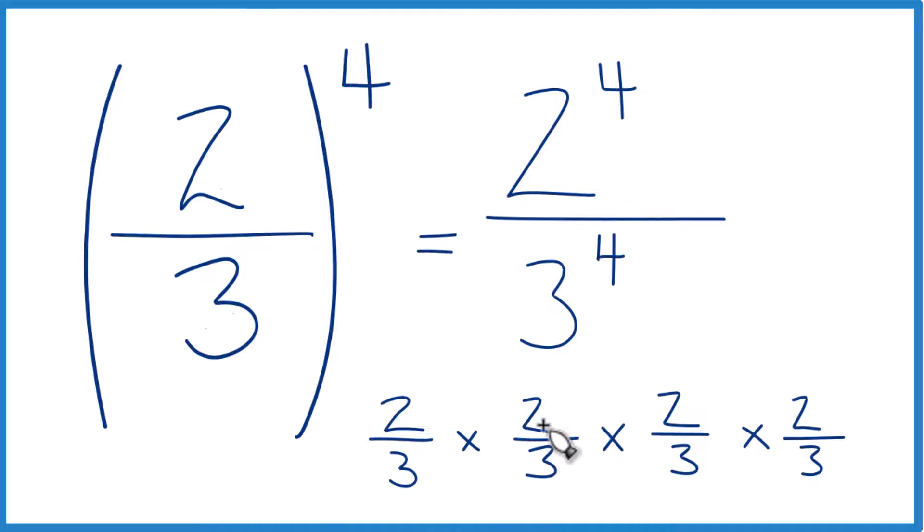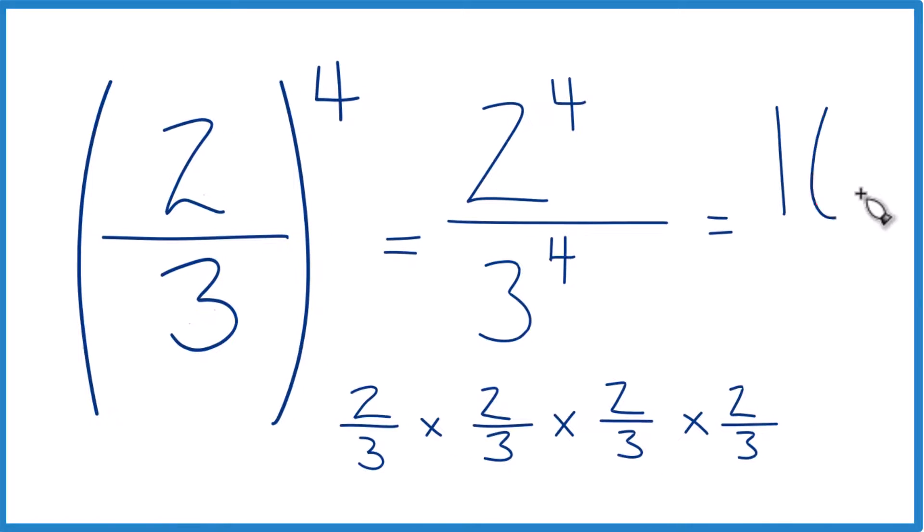Two times two is four, four times two is eight, eight times two equals sixteen. And then three times three is nine. Nine times three is twenty-seven, twenty-seven times three is eighty-one.